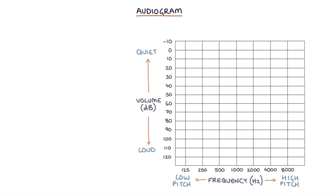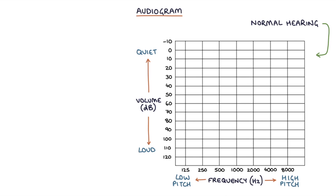When a patient has normal hearing, all readings will be between 0 and 20 decibels at the top of the chart.